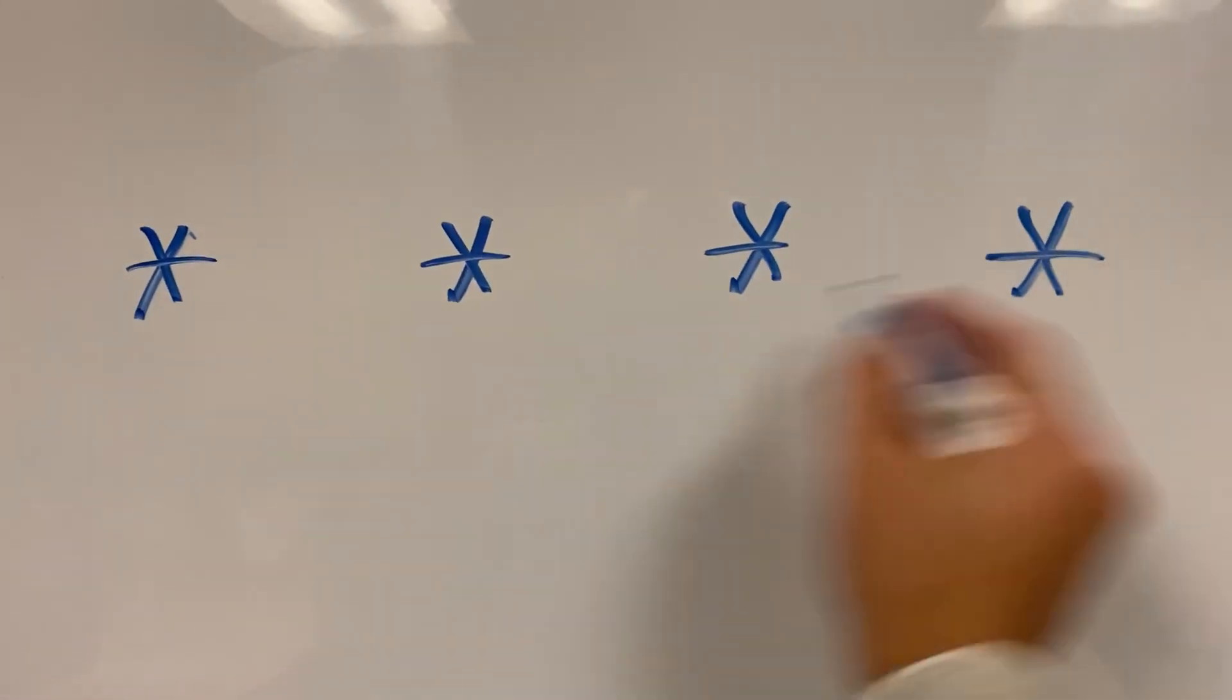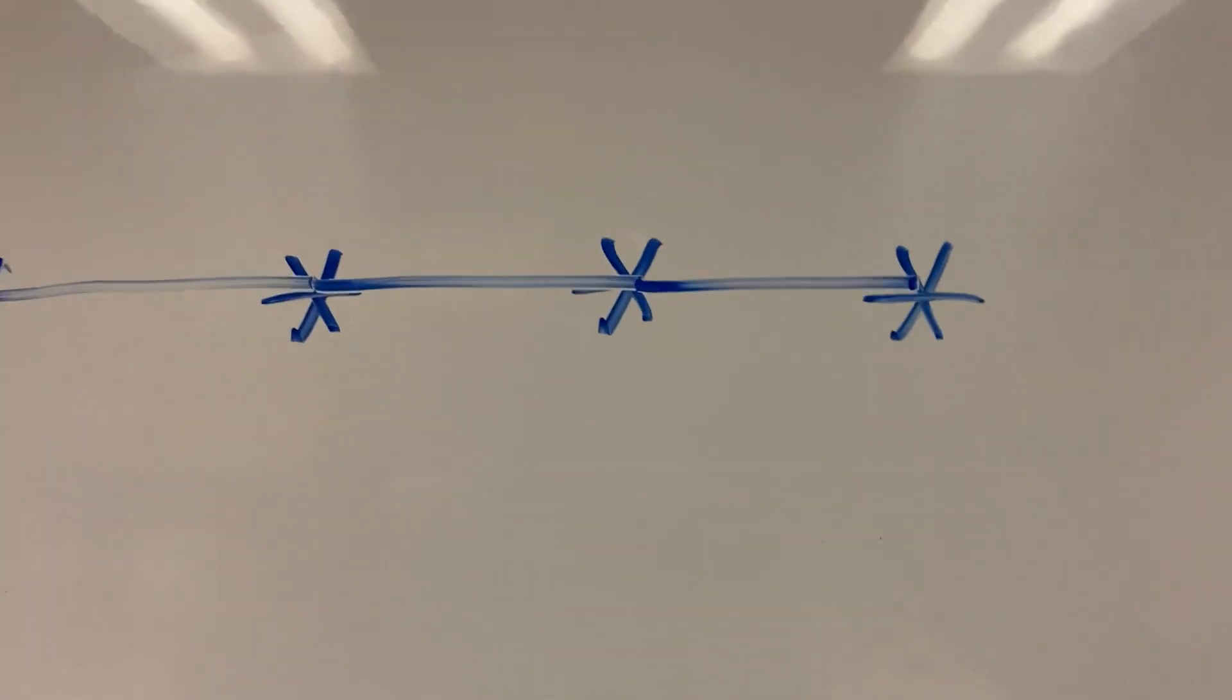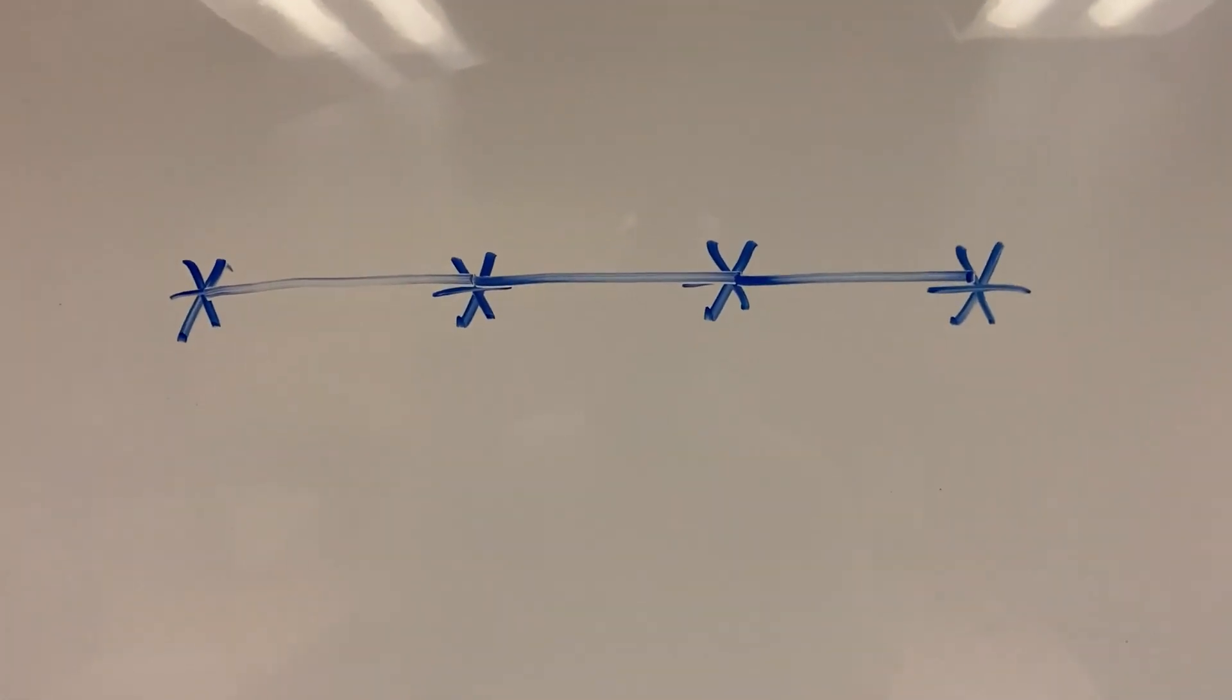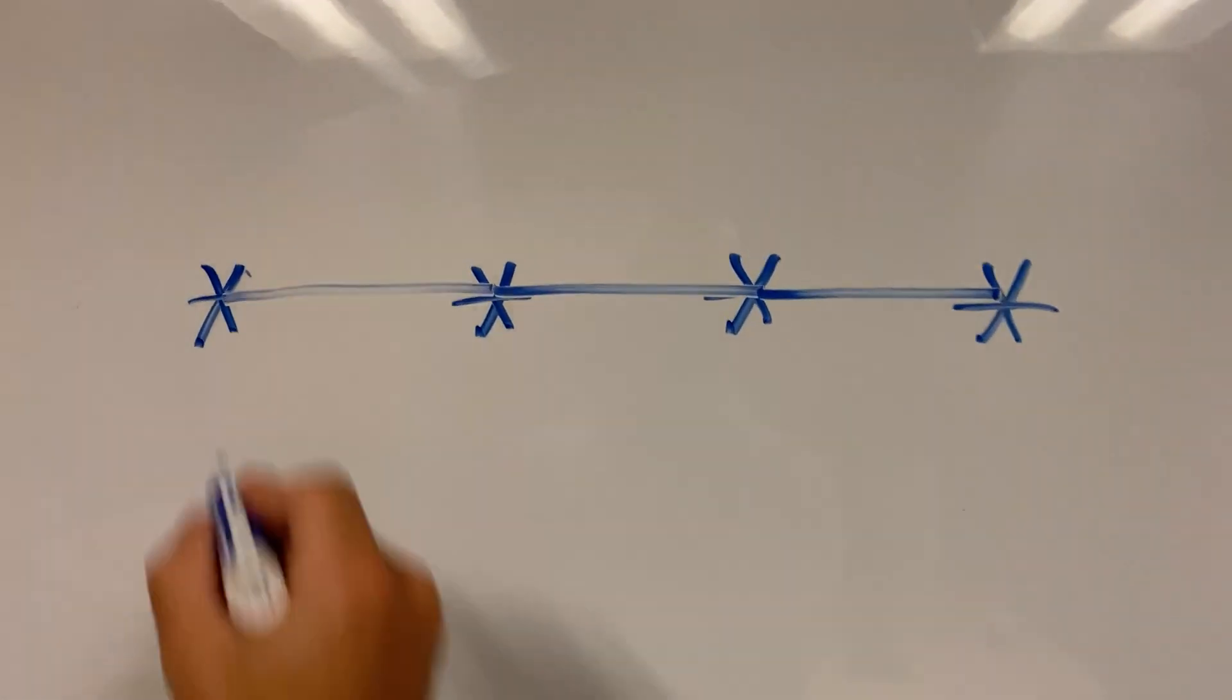So these are neurons in your brain, and as you make decisions or learn something or have experiences, you create these links between your neurons and create this pathway.